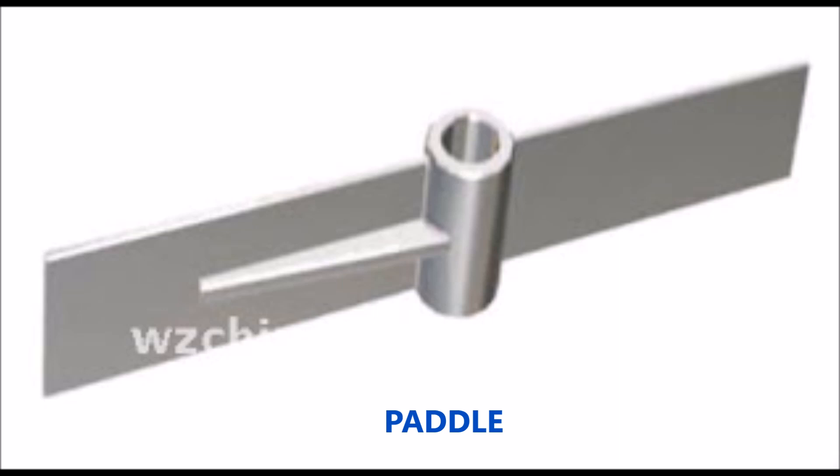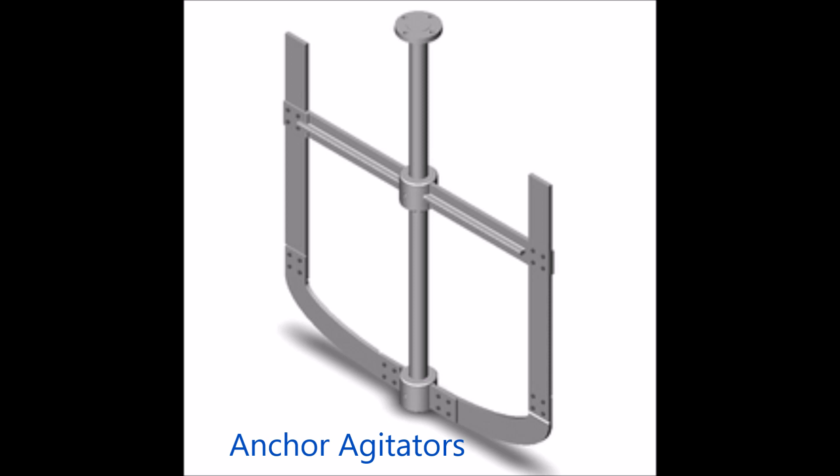Firstly, paddle agitators. This is one of the most primary types of agitators with blades that reach up to the tank walls. These are used where a uniform laminar flow of liquids is desired. Anchor agitators: this simple agitator consists of a shaft and an anchor type propeller, and these are mainly used in reactors.